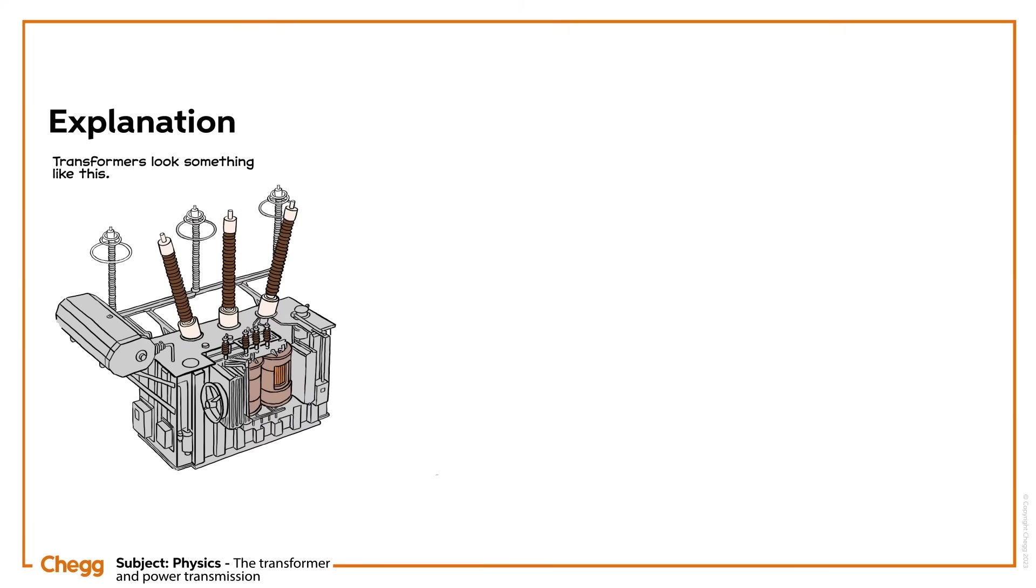Transformers look something like this. Two coils are wound around a soft metal core, usually iron, and one is connected to an alternating voltage source. That's the primary coil. The other coil, the secondary coil, is connected to the output.